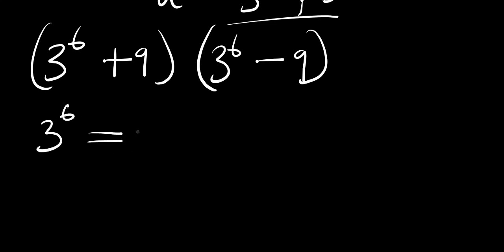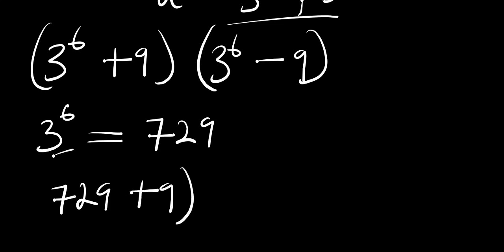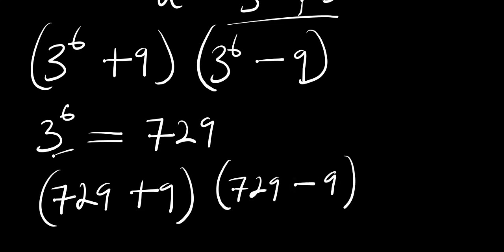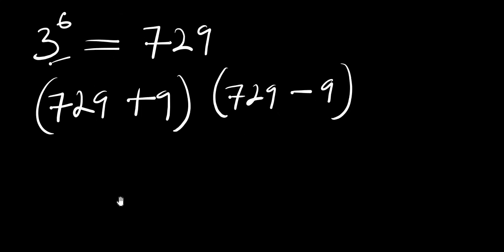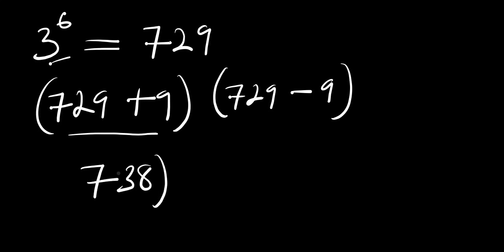The next thing we are going to do is find the value of 3 raised to the power of 6. This simply means 3 multiplied 6 times, and if you do that you get 729. So we replace 3^6 with 729, giving us 729 plus 9 times 729 minus 9. Adding 729 plus 9 gives 738, and subtracting 9 from 729 gives 720.